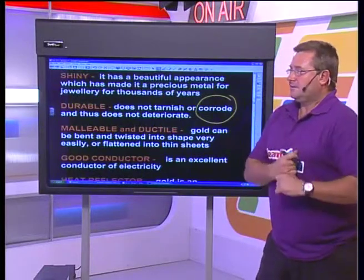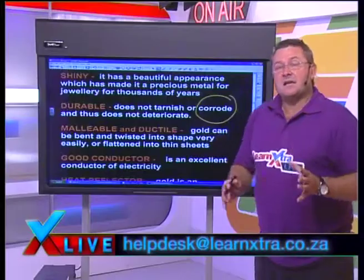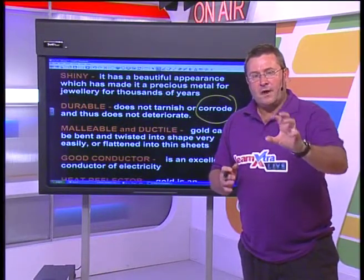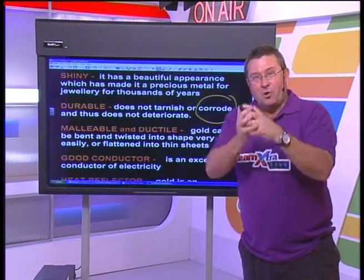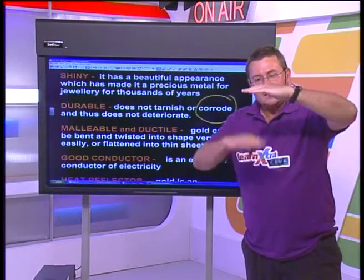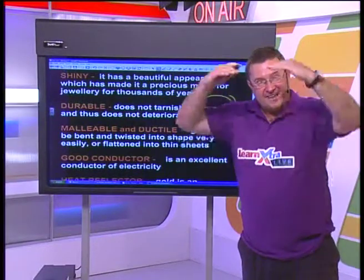Kelly asks can gold be dissolved and with which chemical — we've just covered that: using the cyanide process. Sodium cyanide or potassium cyanide is added to the gold ore, forming the gold cyanide complex in solution. The solution is filtered, and the filtrate containing the complex has zinc added to it, displacing the gold, which then precipitates out as pure gold.